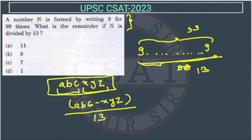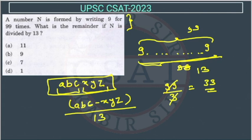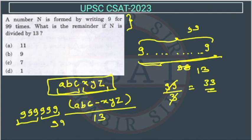We have 99 nines, so we make pairs of 3 digits each. 99 divided by 3 gives us 33 pairs. For example, with 6 nines, we get 999 minus 999 which equals 0, and 0 divided by 13 gives remainder 0. So every such pair is divisible by 13.